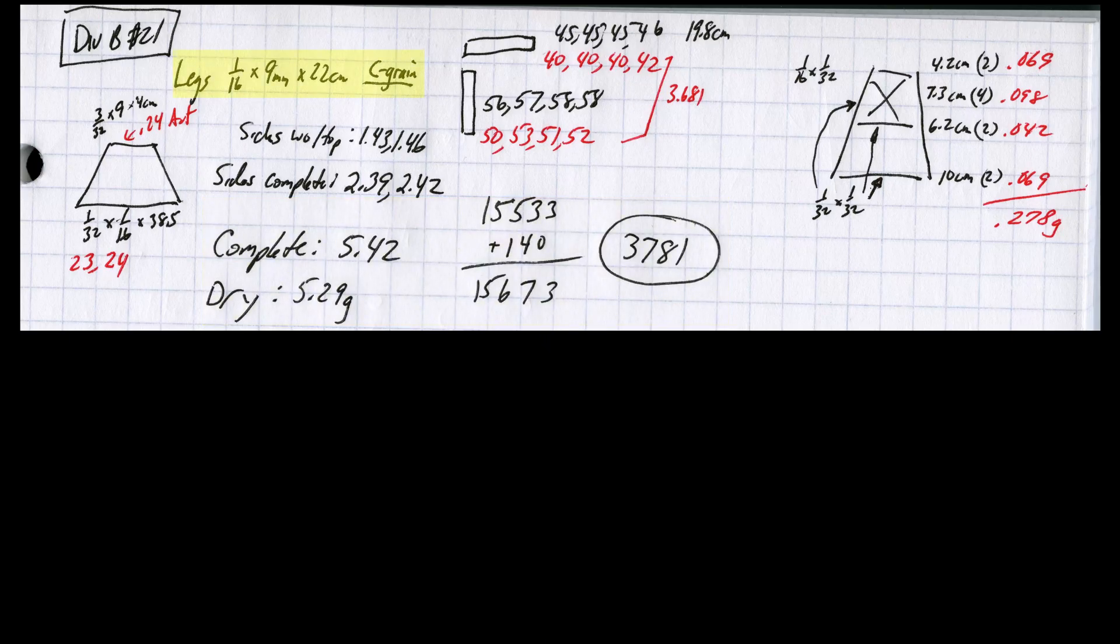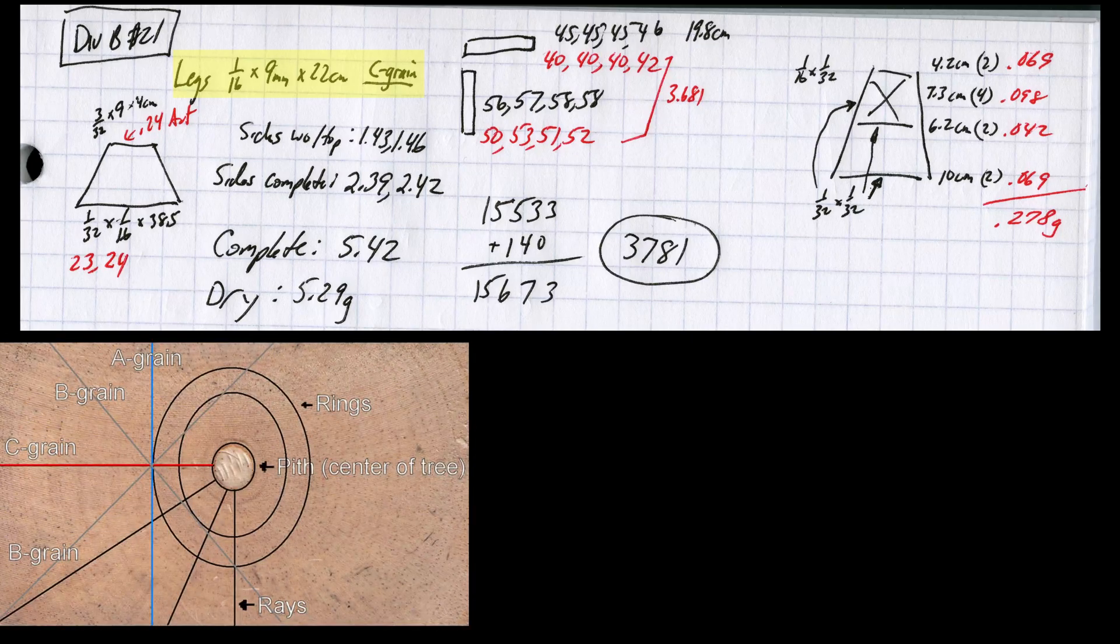This was my first attempt at using C grain balsa for both parts of the leg. For those that don't know, the balsa grain type has to do with how the cross section is cut from the tree. Specialized balsa has some really nice pictures that explain the difference between the types. Most balsa that you find is typically A or B grain or some combination of both. C grain is special because the annular rings run through the thickness of the sheet.